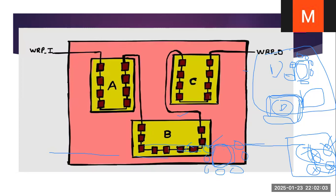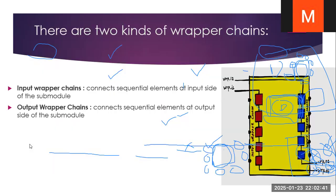Here we have one design, a second design and a third design. This is a vapor chain input and this is a vapor chain output — these are the vapor chains, surrounded by the design core. We call these core A, core B and core C. If you want to test, we should pass values like this. This is a basic structure; we will understand it further in the upcoming slides.